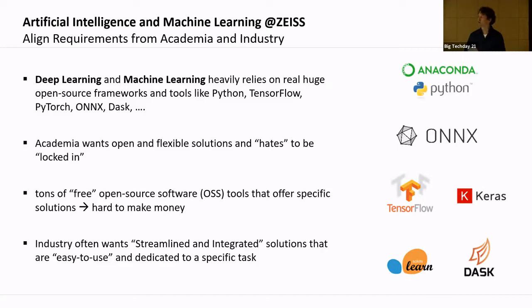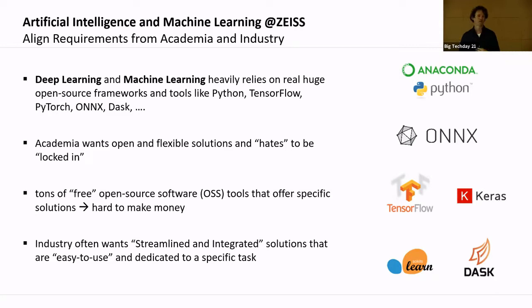As probably all of you know, AI heavily relies on open source frameworks like TensorFlow and PyTorch — and at Zeiss, we also use them. There's no point in reinventing this yourself. One tricky thing is that academia wants flexibility and hates being locked in. Any kind of black-box solution is largely not an option for them. Sometimes there are even rules requiring you to show the source code if asked, which is not typically the case in industry.